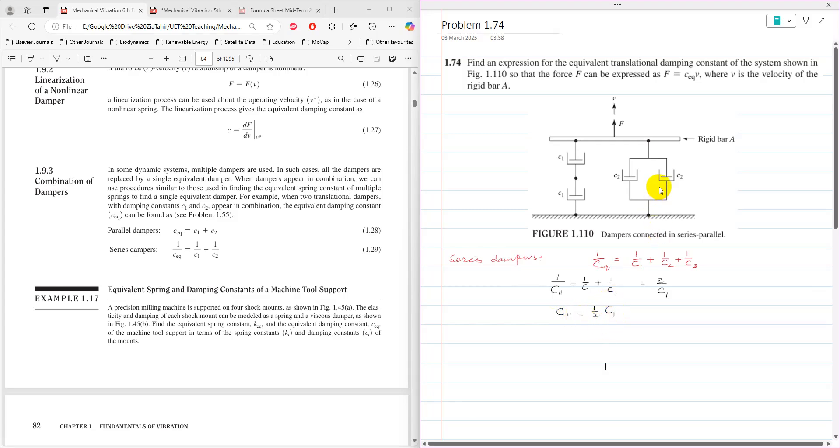Now the c2 dampers are connected in parallel. For parallel dampers, c_equivalent equals c1 plus c2 plus c3. So the equivalent damping of c2 and c2, which I'll name c22, is the simple addition of c2 plus c2, which equals 2c2.